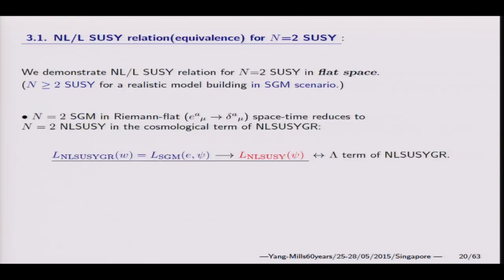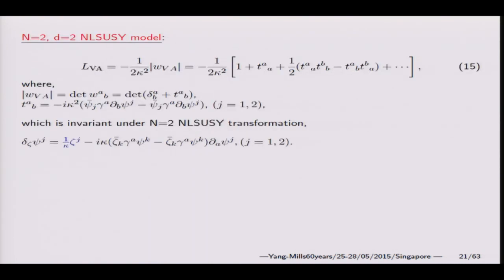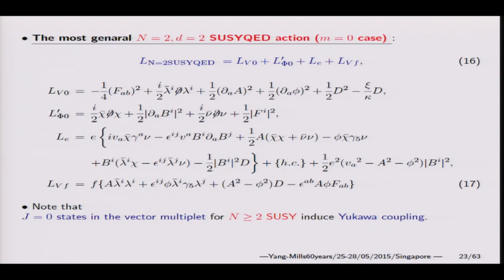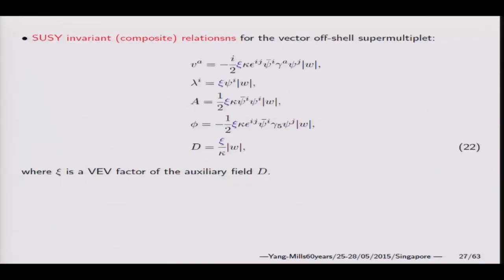For example, we consider N equals 2 case. We consider here non-linear theory, N equals 2 non-linear theory action. For simplicity, we consider flat space. Flat space is a non-linear theory action. This is the N equals 2 Volkov-Akulov action. This action is equivalent to N equals 2 linear SUSY QED action. This is very popular N equals 2 SUSY QED. This is gauge multiplet, this is matter multiplet.